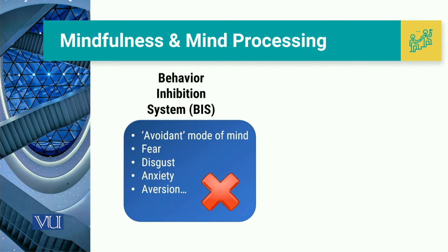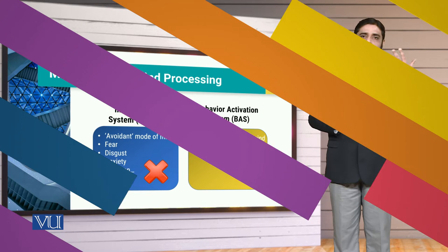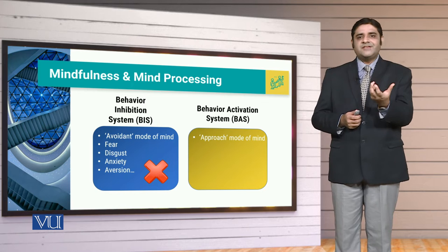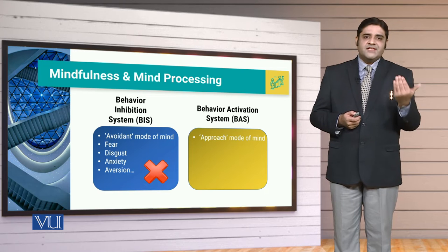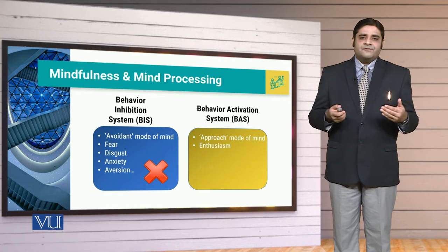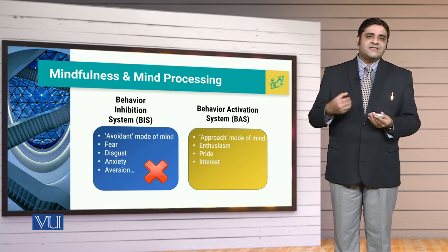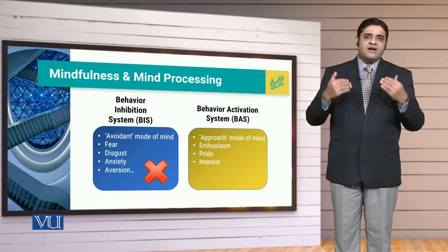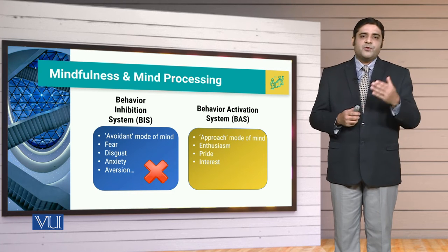If we go to positive thinking, then we have to inculcate the Behavior Activation System. That Behavior Activation System is actually talking about the positive approach of the mind. We have to have the enthusiasm. We have to have the involvement, and if we have the involvement of the person then we will try to understand the thing, and then the positivity will automatically be created.